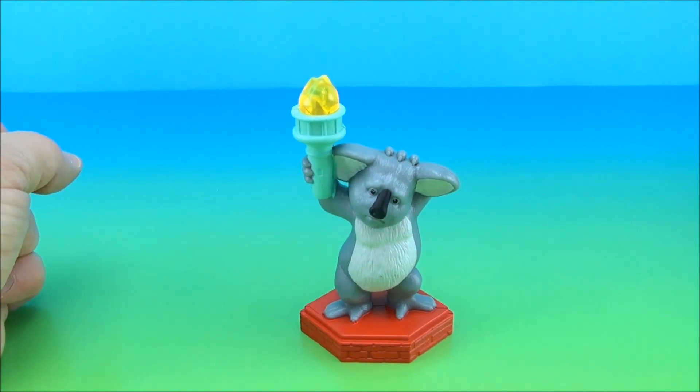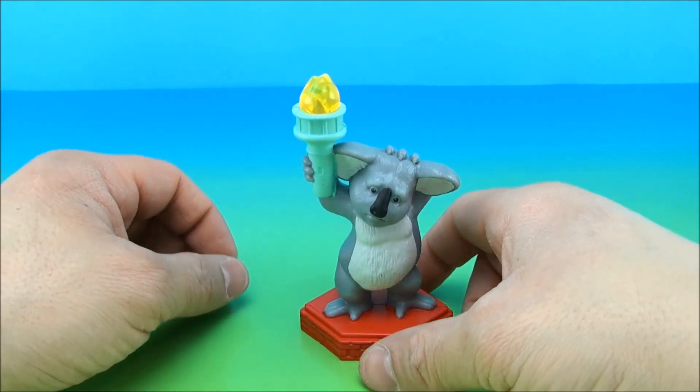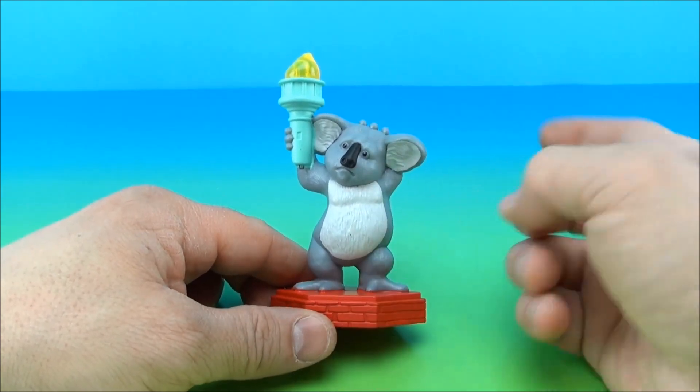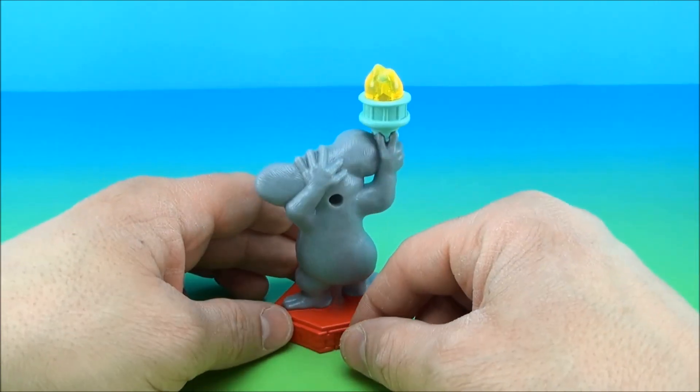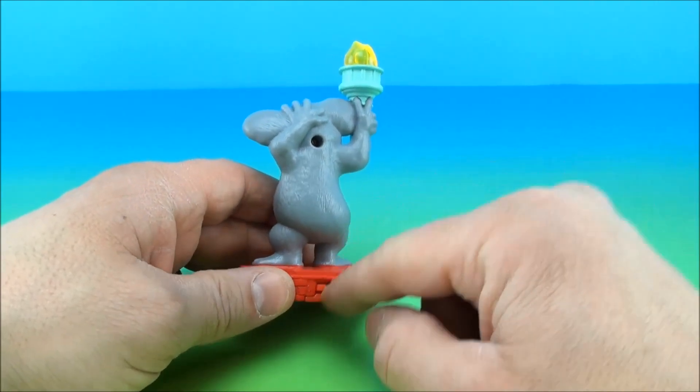Next up, we have Nigel, the koala bear, holding a Statue of Liberty torch and his own head. So he's just kind of scratching himself, holding the torch up. It does have an on-off switch.